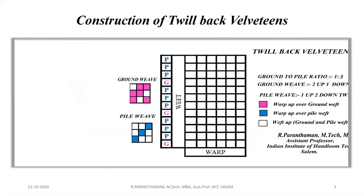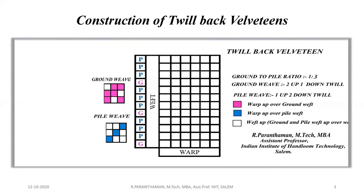Another kind of twill back velveteen: here we are taking ground weave as two-up one-down twill, and pile weave as one-up two-down twill. The ground to pile ratio is one to three — one ground weft and three pile wefts. Mark the ground weave on ground threads: two-up one-down twill.